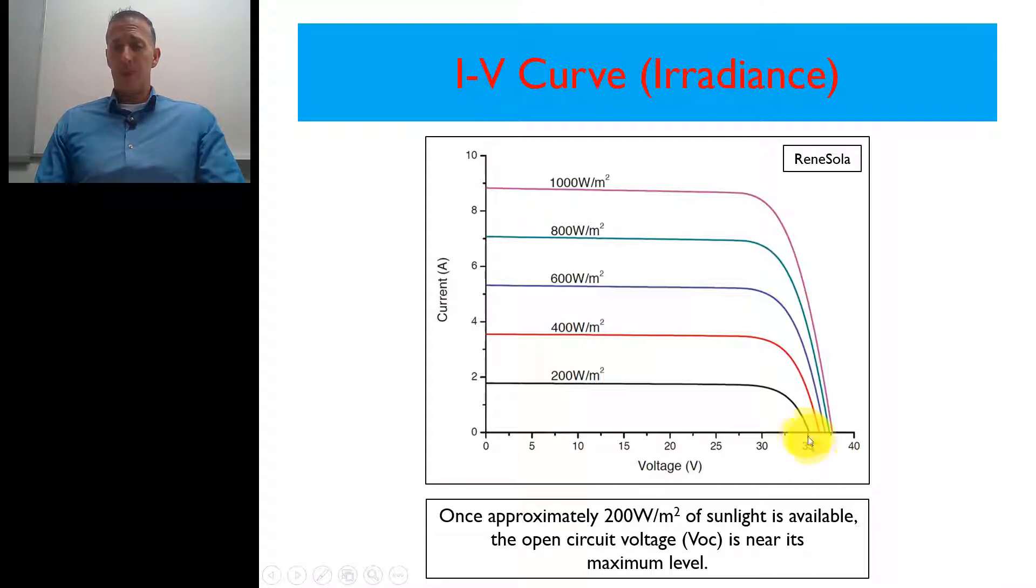On this 250 watt module, it would be about 35 volts open circuit voltage. And the only time it would be higher, it slowly creeps up if we get to 1000 watts, which is five times more sunlight. It only creeps it up to about 37, just over 37 volts. So not a big change.